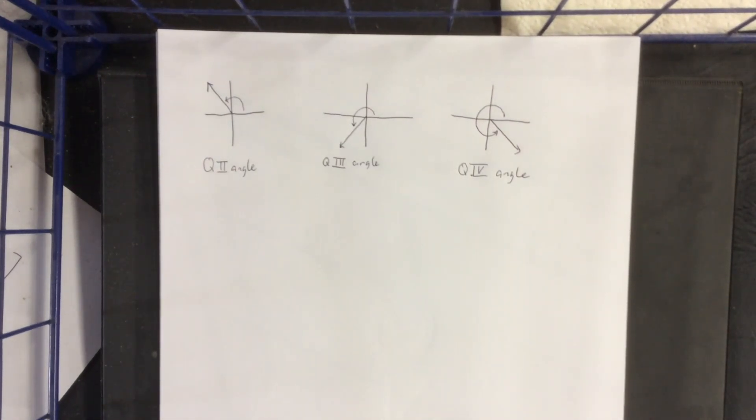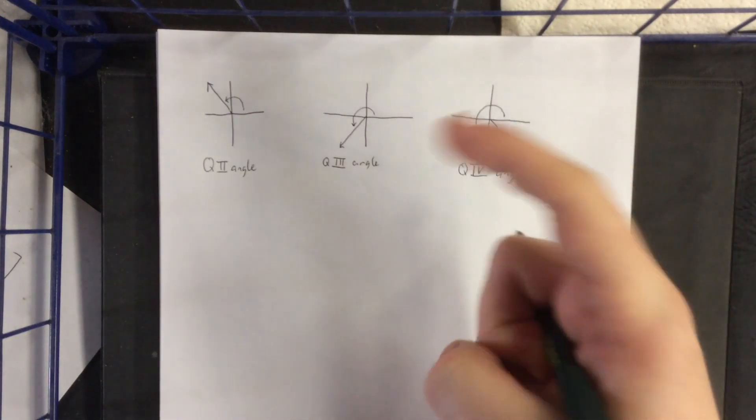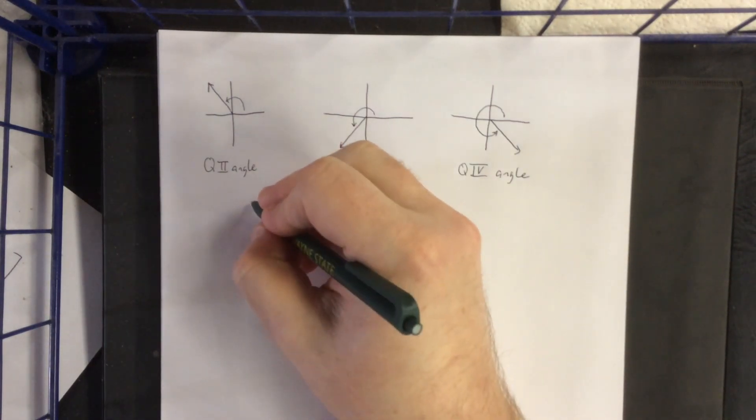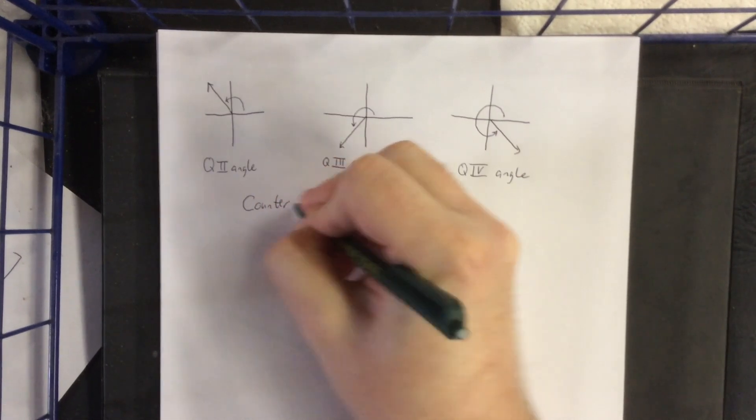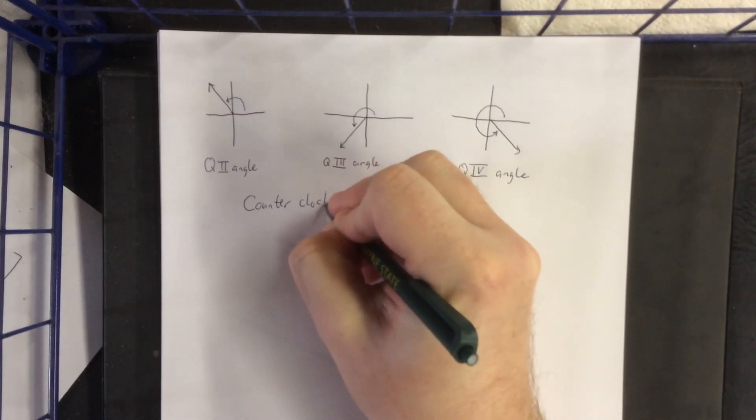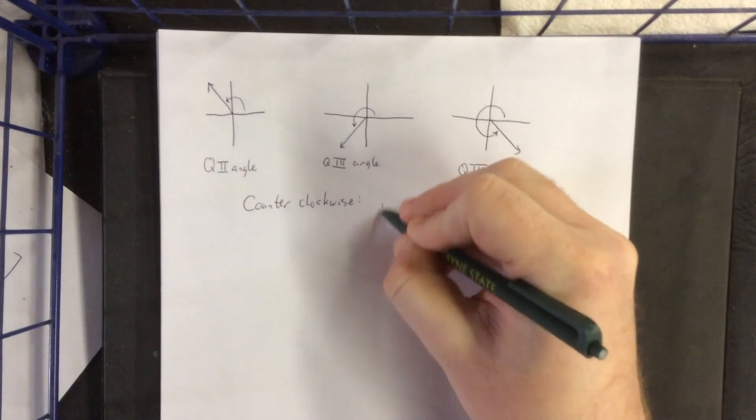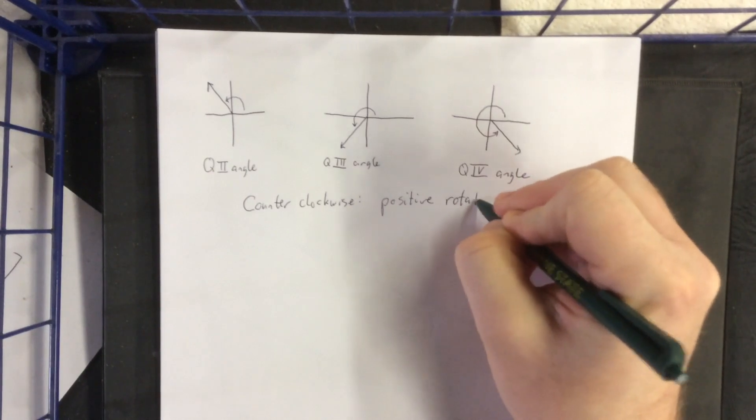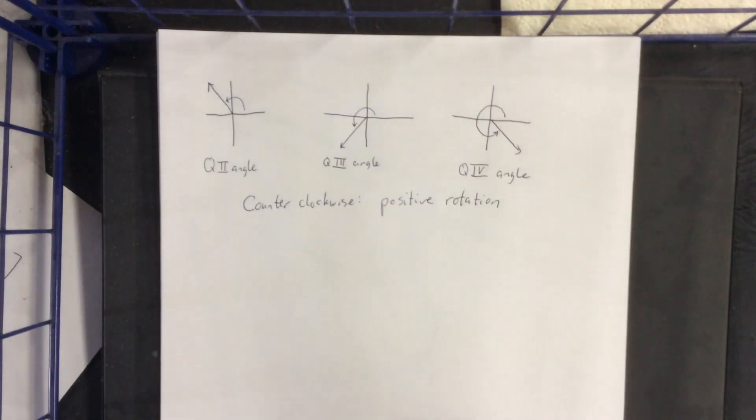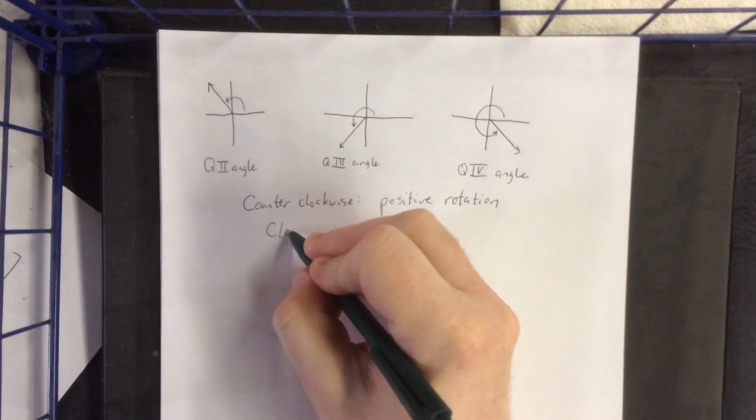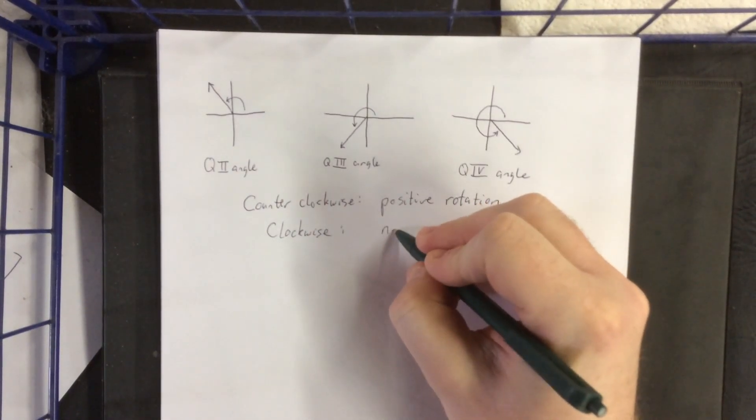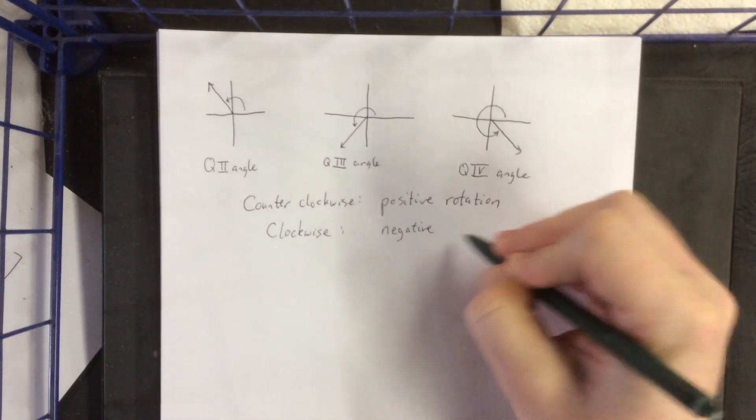Now, you'll notice that as I'm indicating the rotation from initial side to terminal side, I keep rotating in the same direction, which is sort of this counterclockwise motif. There is a reason for this. If an angle is counterclockwise, we consider that to be a positive rotation. And by the same token, if we were to say a clockwise rotation, then we are referring to a negative rotation.